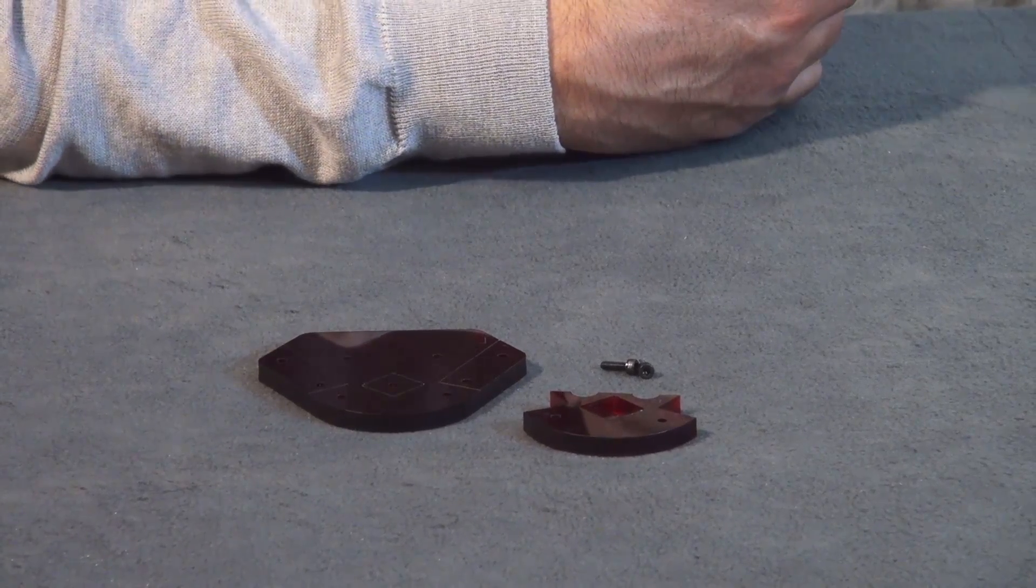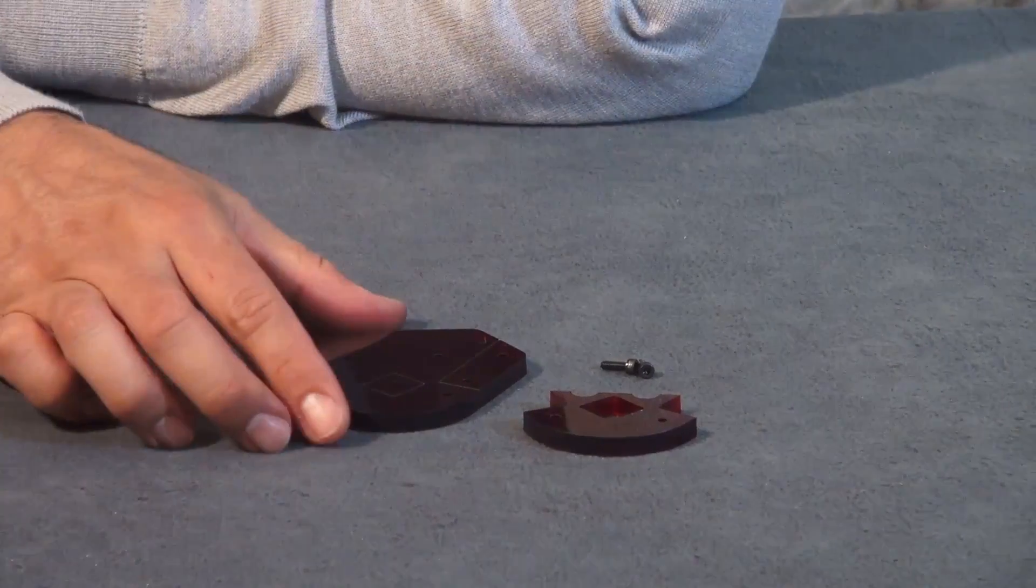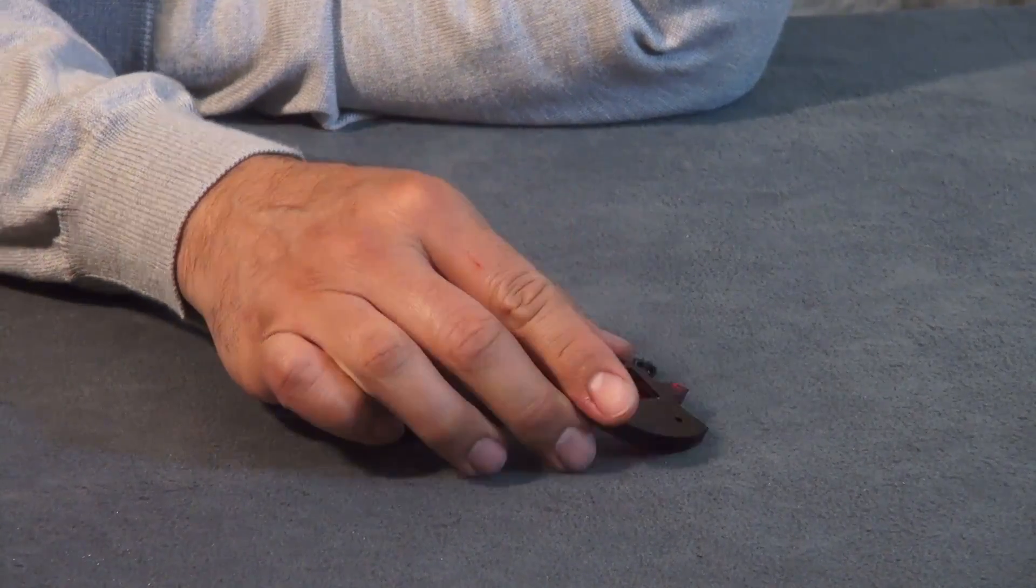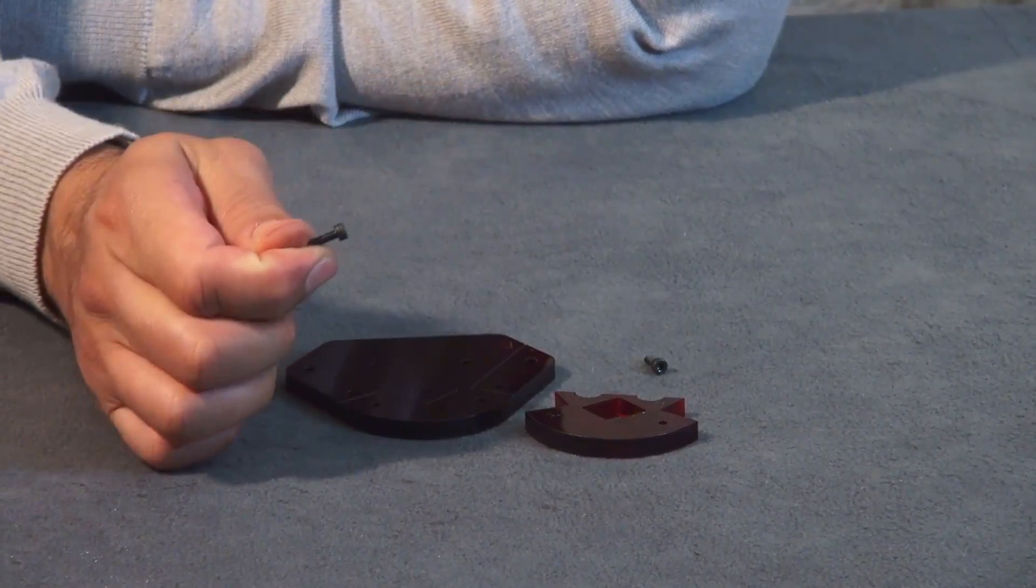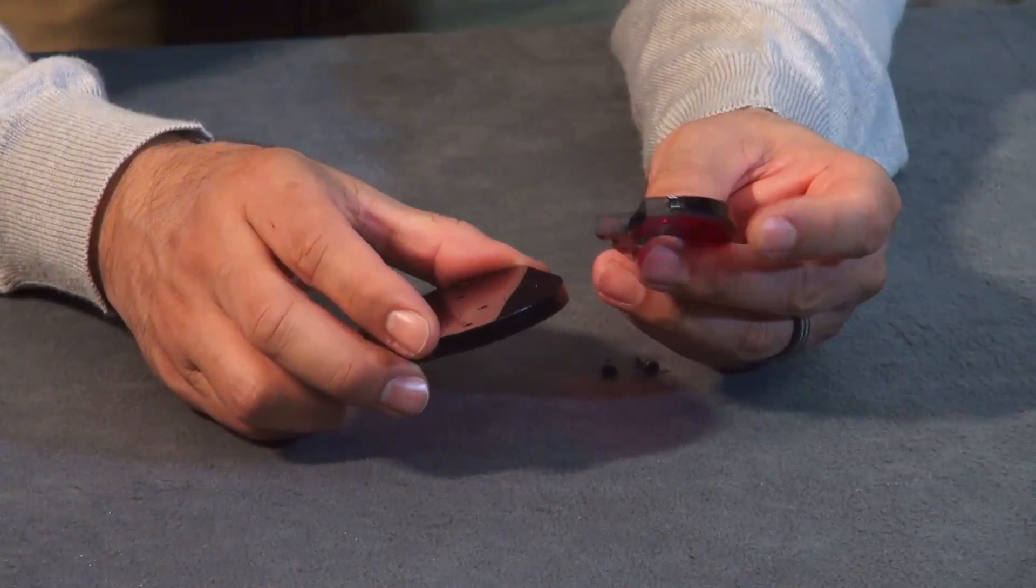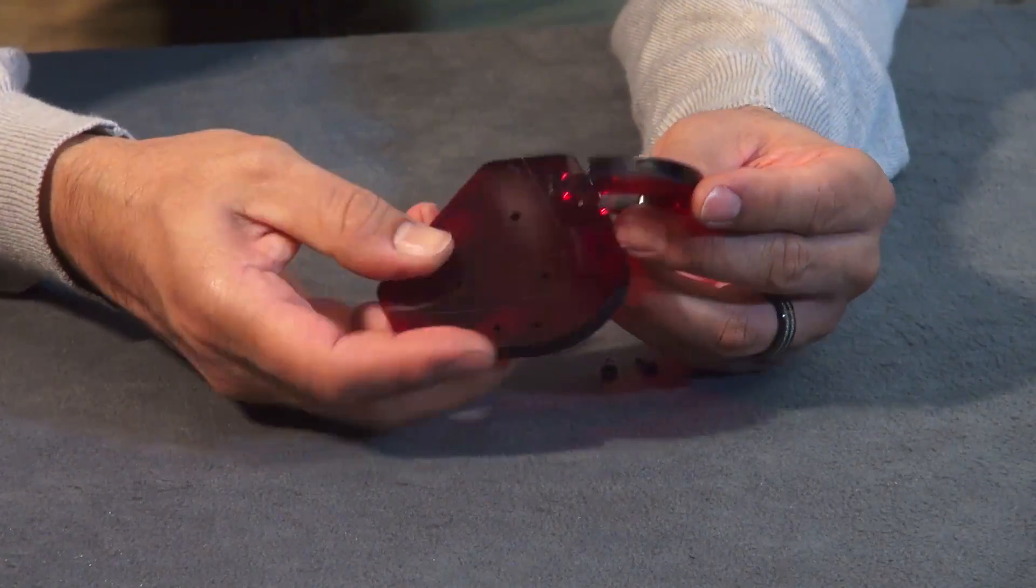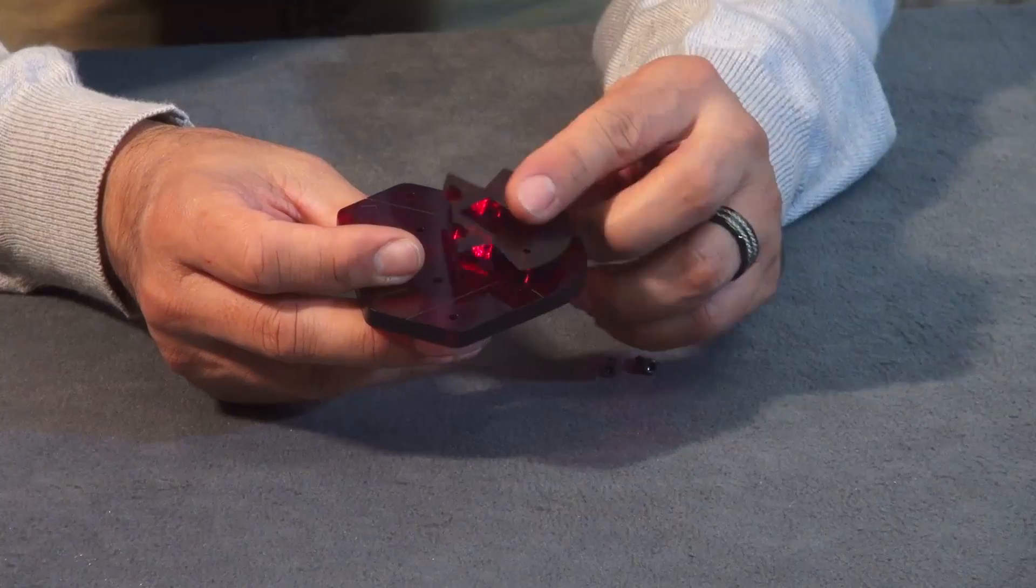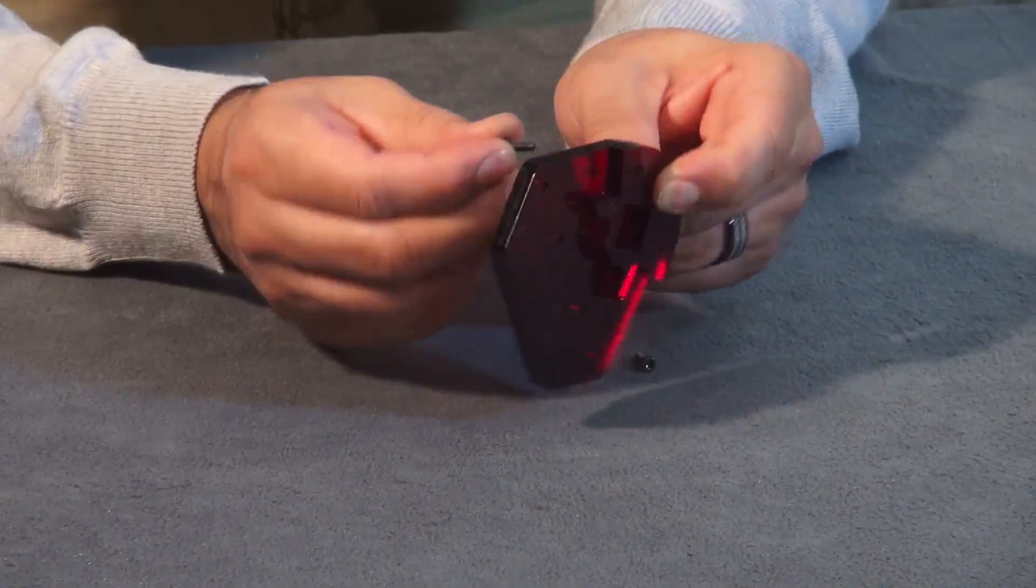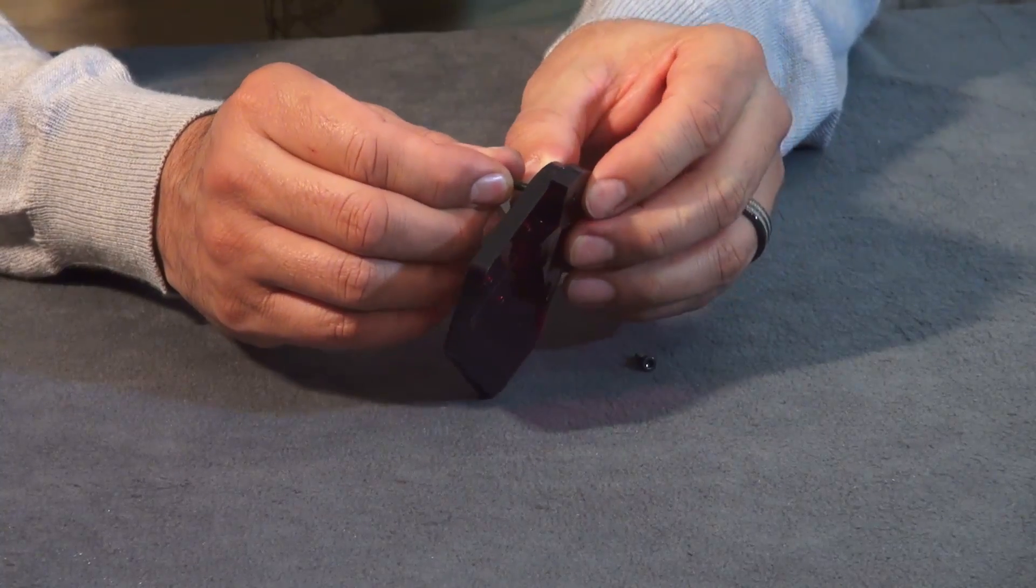Alright, now for assembling the top bracket, we're going to need part L and part P with two M3 by 10 millimeter bolts. The P is going to go on the side with your guide marks. Your bolts are going to go through the back side, the smooth portion on the back.